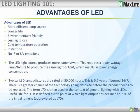Advantages of LED include: more efficient light source, longer life, environmentally friendly — meaning no heavy metals like mercury or lead — less light loss, cold temperature operation, instant on, and no infrared or ultraviolet emissions. This is just a short list of many advantages. The LED light source produces more lumens per watt, requiring a lower wattage lamp or fixture to produce the same amount of light, resulting in lower energy consumption.